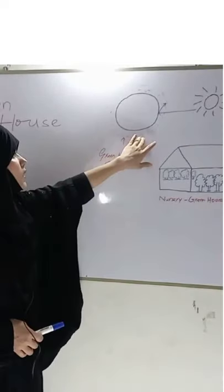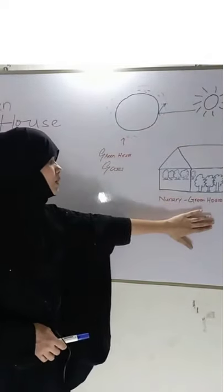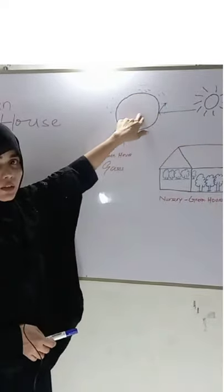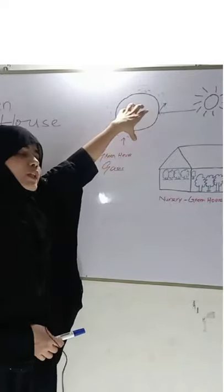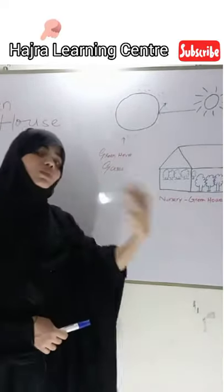So in the atmosphere, in a similar way as it happened in the greenhouse in the nursery, the same thing happens here, naturally. Sun radiation falls on the earth. Some of the sun radiation is absorbed by earth and some of the radiation is returned or reflected back to the space.